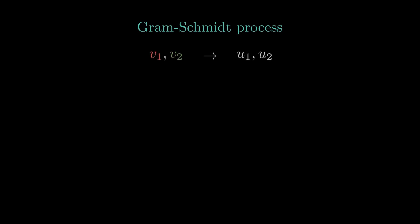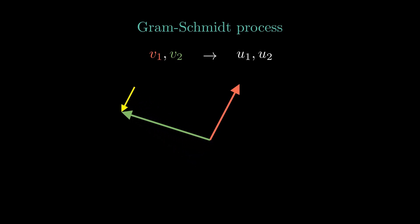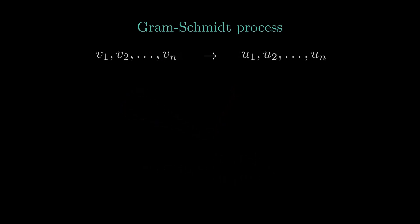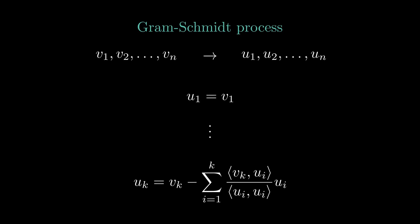Let's start with a sequence of two vectors that are not a multiple of each other. We now project the second vector onto the first, which gives us a multiple of the first vector. When we subtract this vector from the second vector, we get two orthogonal vectors. This process works on any number of vectors. We set the first orthogonalized vector to our first vector, and the kth orthogonalized vector can be calculated recursively by projecting the kth vector onto the vectors we have already calculated and subtracting the projections.